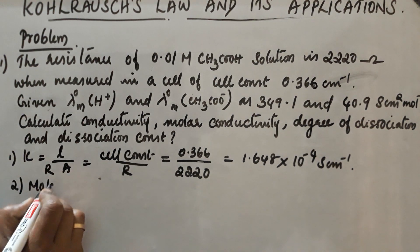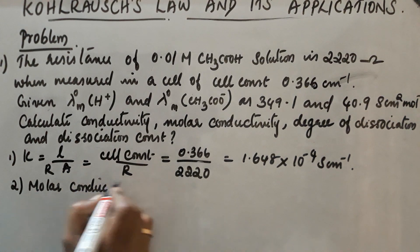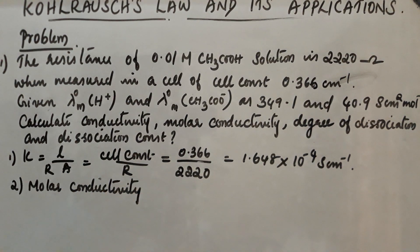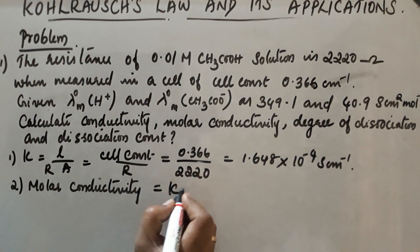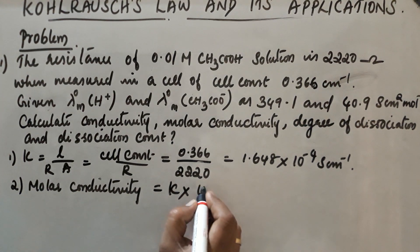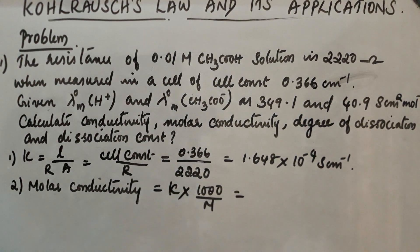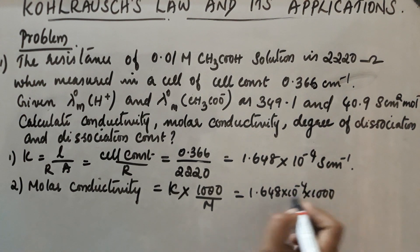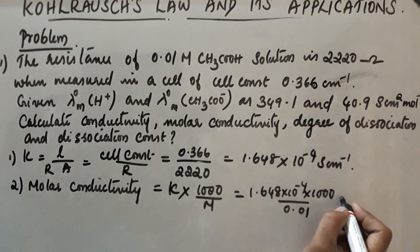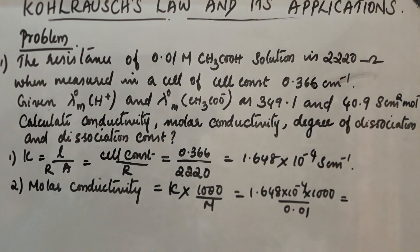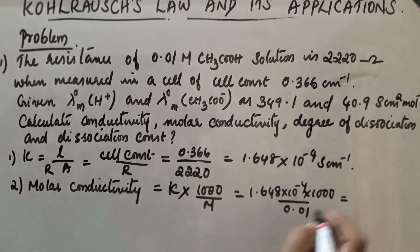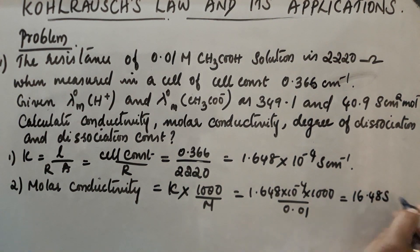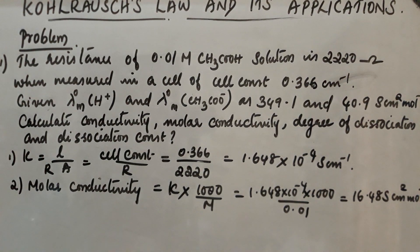Next, molar conductivity λ_M = κ × 1000 / molarity. κ is 1.648 × 10⁻⁴, multiplied by 1000, divided by molarity 0.01. The answer is 16.48 S·cm²·mol⁻¹. This is the molar conductivity.